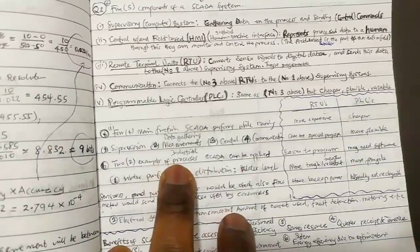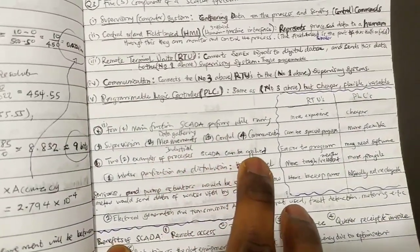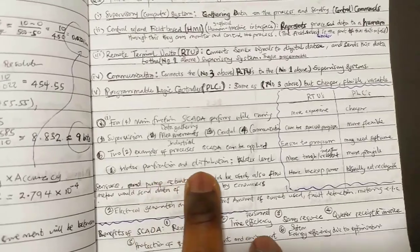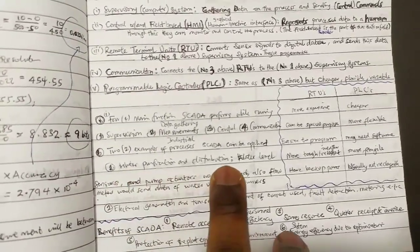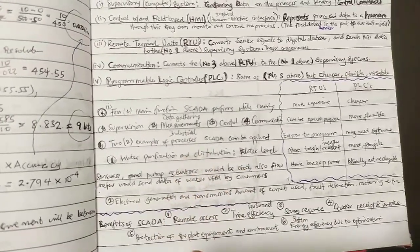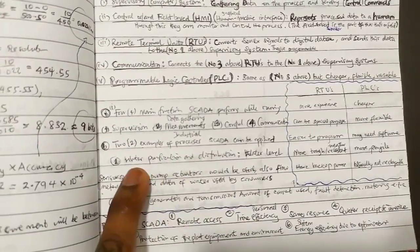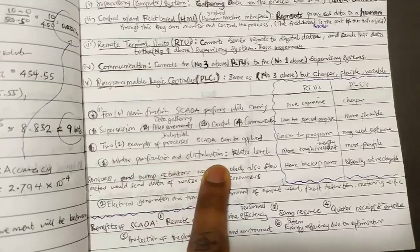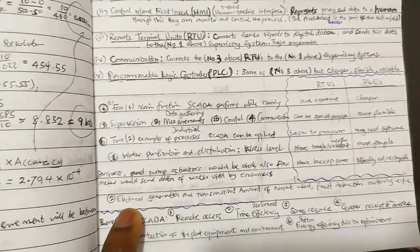Two examples of industrial processes that SCADA can be applied to: water purification and distribution, and electrical generation and transmission. They're actually kind of similar in the way they operate.